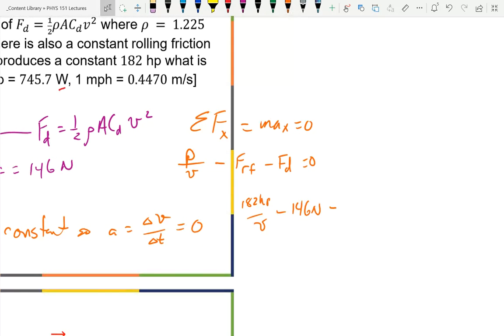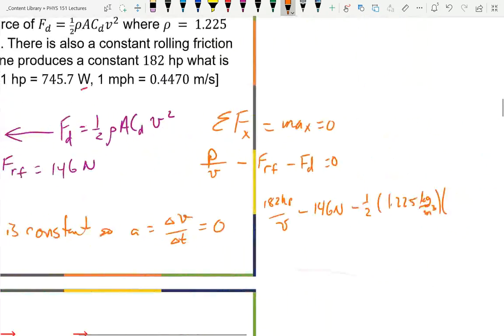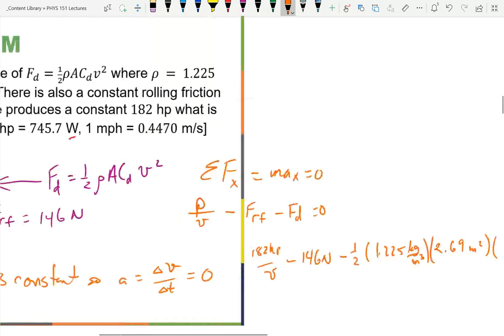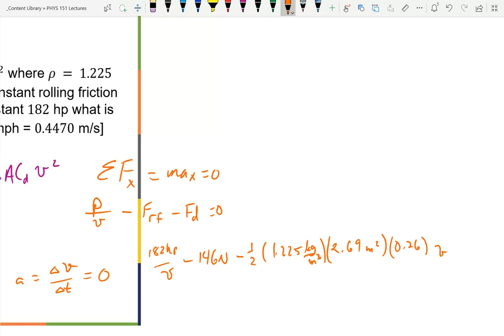I'm putting in numbers here that are going to be problematic to say the least. Times my area which was 2.69 meters squared, times C_D which was 0.26, times V squared. So now I have V two places. If we multiply all terms by V so we get it out of the denominator, we have the highest power is V cubed. So that's a cubic. That's a little less than fun to solve. We're not going to try to solve it here in class. Your calculators probably will solve a cubic problem. They probably have a solver to do that. But there is another inherent problem that I said I was going to bring up. The units of power.